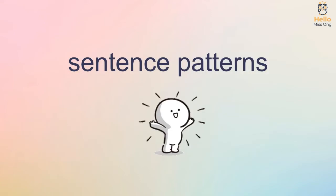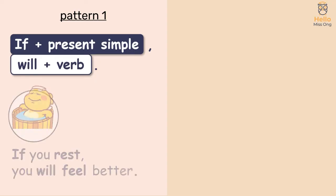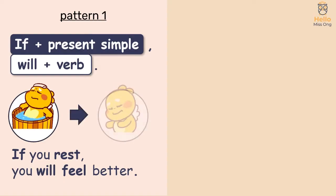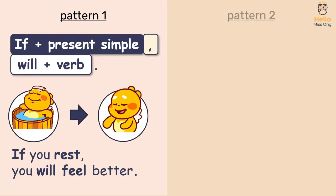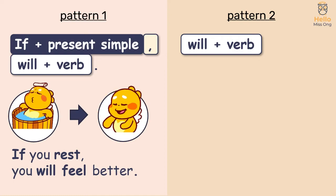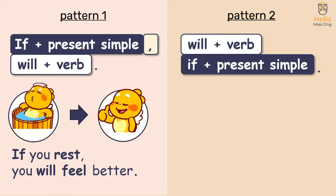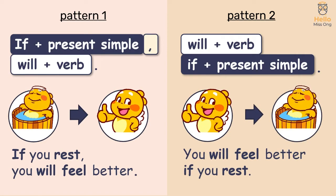Let's look at the sentence patterns. There are two patterns. The first pattern is: If + present, will + verb. For example, if you rest, you will feel better. Note that we use a comma after the if clause. Another pattern for the first conditional is: will + verb + if + present. For example, you will feel better if you rest. Note that we don't use a comma before the if clause.